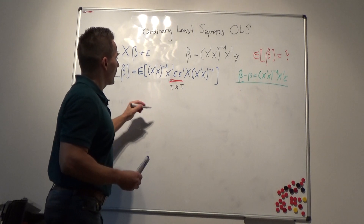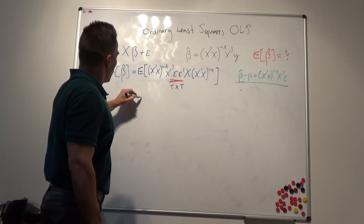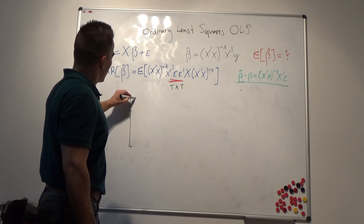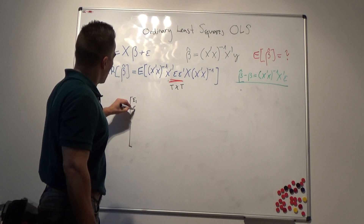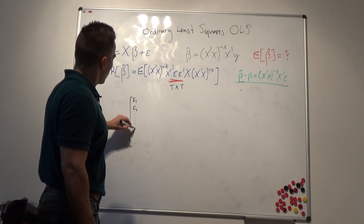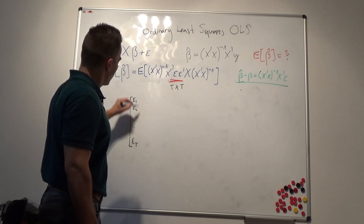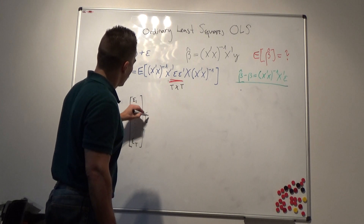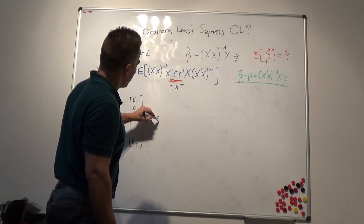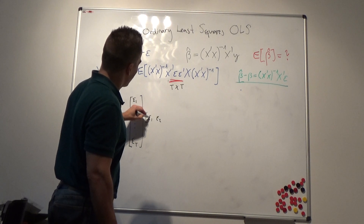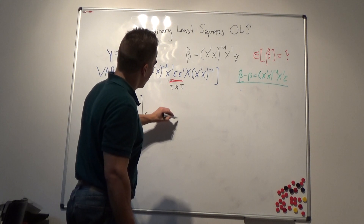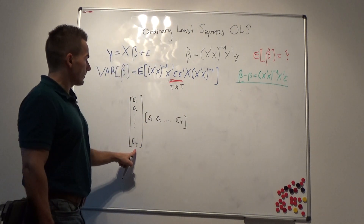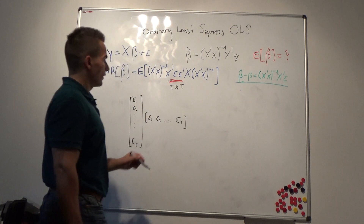The T-by-T matrix ε·ε' is formed by the column vector (ε₁, ε₂, …, ε_T)' multiplied by the row vector (ε₁, ε₂, …, ε_T). A T-by-one times a one-by-T product yields a T-by-T matrix, as required.